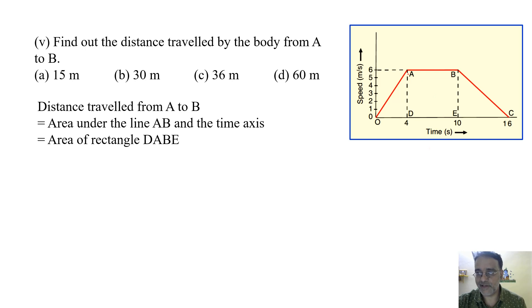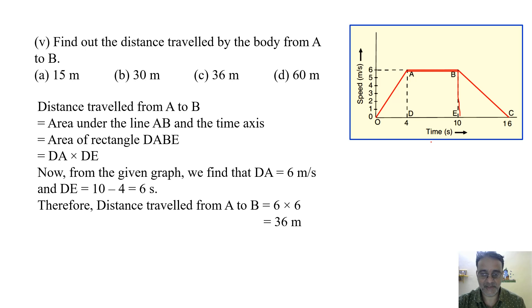And we know that area of rectangle is equal to length into breadth. So this is 6 and this is also 6. So we will get 6 into 6, 36 meter. So the correct answer is C.